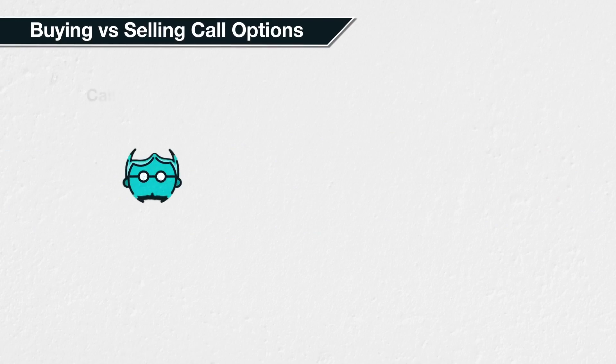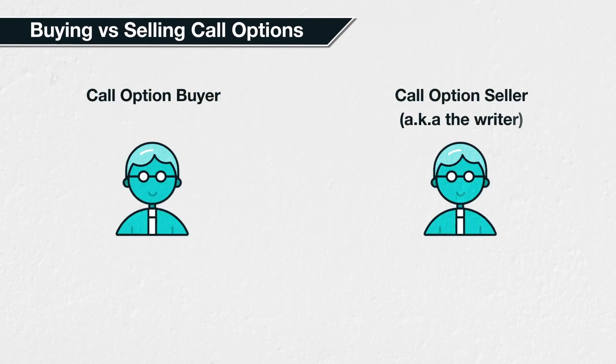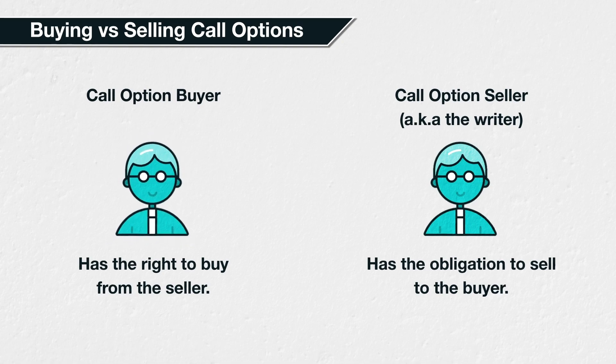Every option trade has a buyer and a seller. On most option platforms, it is possible for traders to both buy and sell options if they wish. Selling an option is also sometimes referred to as writing an option. So far, we have focused on call options from the buyer's side, but it's also important to understand the transaction from the seller's point of view as well.